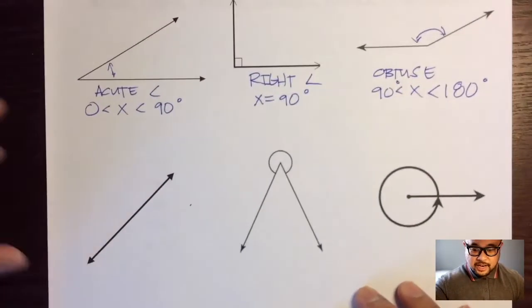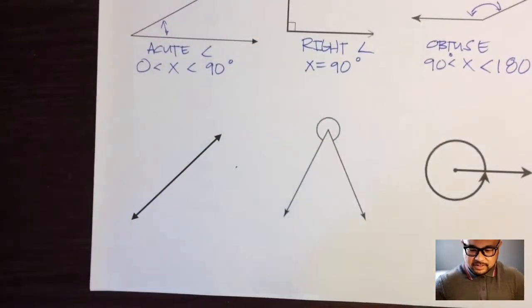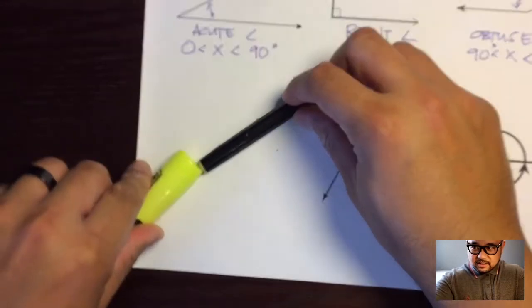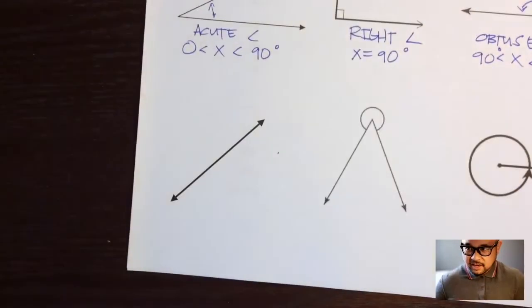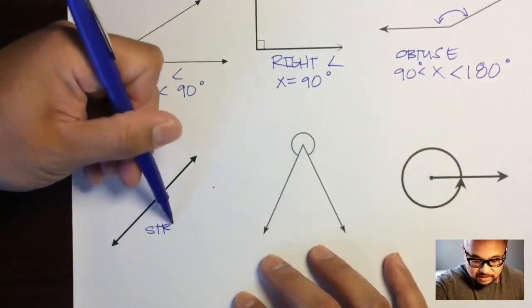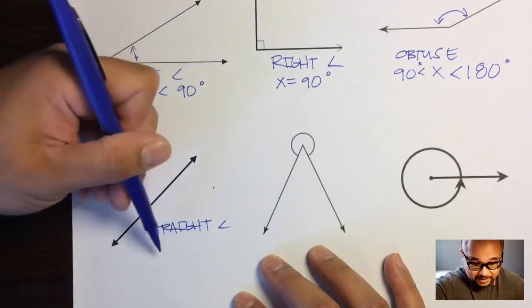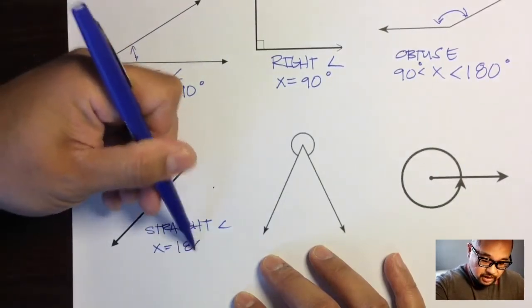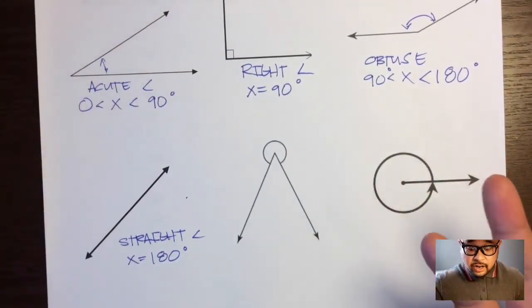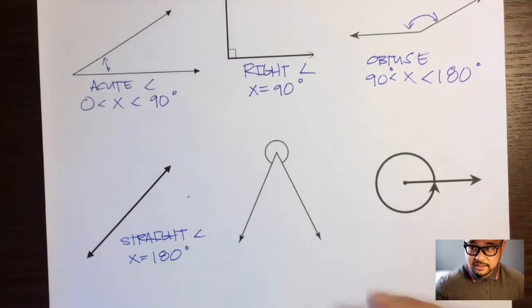Our fourth type of angle is this angle right here. It looks like just one line but you notice there's two arrows right there. So that means that two lines rotated so far that they combine to make one singular line. And that one angle is called the straight angle. And a straight angle is exactly 180 degrees. So it's like if I asked you, hey turn 180 degrees, you'd start from facing this way and you would face the total opposite way.